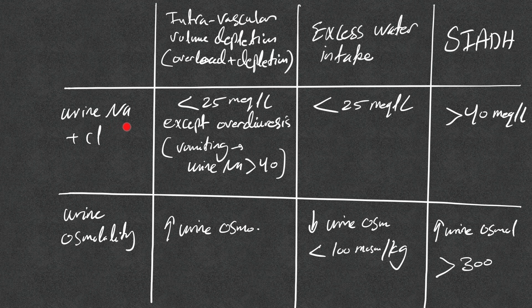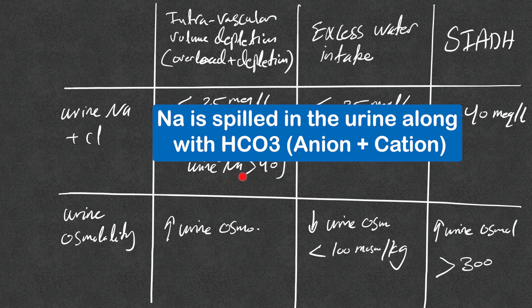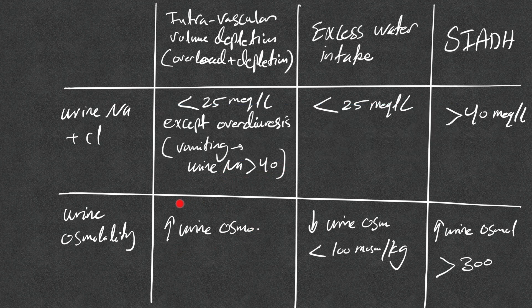Overdiuresis causes higher urine sodium and chloride, so that exception applies. In vomiting, only urine chloride will be low, because vomiting strongly stimulates metabolic alkalosis and the kidney spills sodium in urine to try to correct the alkalosis — so urine sodium can be above 40 mEq/L. Urine osmolality is typically elevated, above 300 and sometimes above 600 mOsm/kg, as the body tries to concentrate urine and preserve volume.